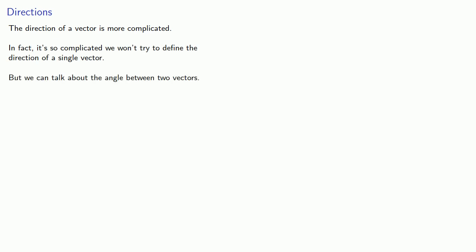A vector has both magnitude and direction, and finding the magnitude is pretty easy. The direction of a vector is more complicated. In fact, it's so complicated we won't try to define the direction of a single vector, but we can talk about the angle between two vectors.